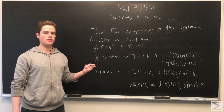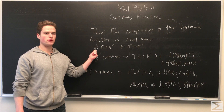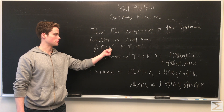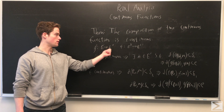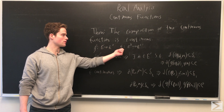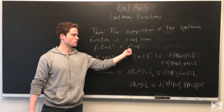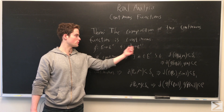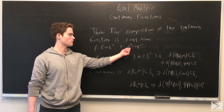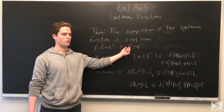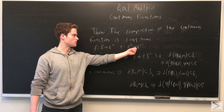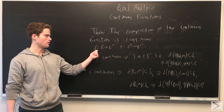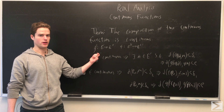Since G is continuous, for points close enough in E prime, the points will be as close as we want in E double prime. And since F is continuous, for points close enough in E, we're going to get points as close as we want in E prime. So we take F to bring points in E close enough so that points in E prime are close enough that we can apply the continuity of G.